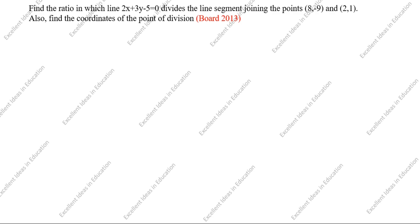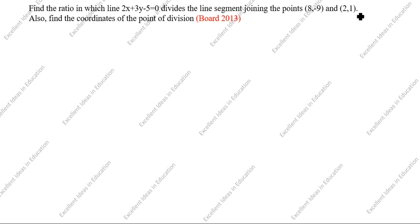Hi friends, welcome to my channel, Excellent Ideas in Education. Today we are going to solve this coordinate geometry problem. This is a board exam problem. Find the ratio in which the line 2x plus 3y minus 5 equals 0 divides the line segment joining the points 8 comma minus 9 and 2 comma 1.